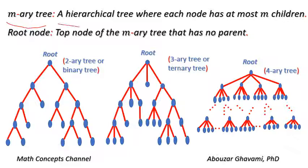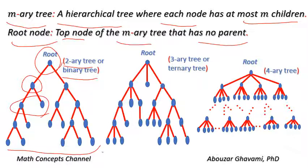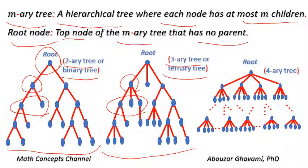An M-ary tree is a hierarchical tree where each node has at most M children. The root node is the top node of the M-ary tree that has no parent. For example, the left hierarchical tree is a two-ary tree, also called a binary tree, where each node has at most two children. The middle hierarchical tree is a three-ary tree, also called a ternary tree, where each node has at most three children. The right hierarchical tree is a four-ary tree, where each node has at most four children.